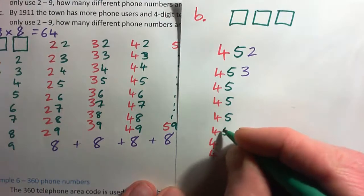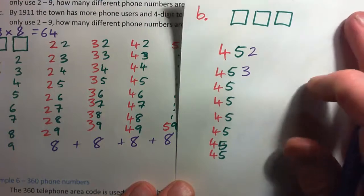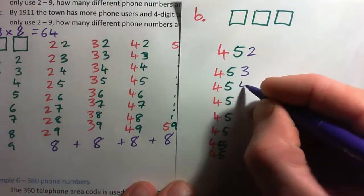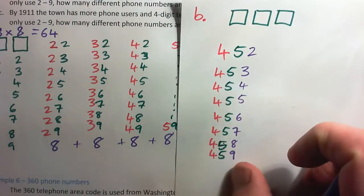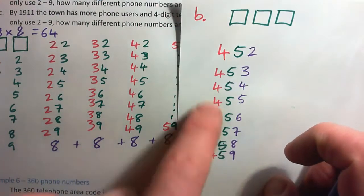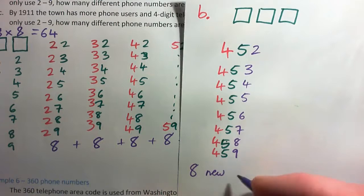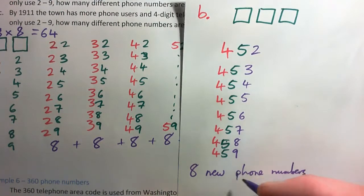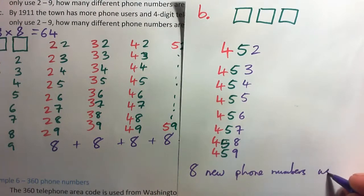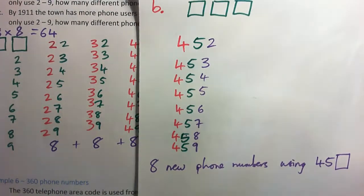So for the phone number 4-5, just by adding one more digit, you can create 8 new phone numbers. And you can do that for any 2-digit phone number — for example 8-9. The key to understanding this is: 4-5-something gives us 8 new phone numbers, and you can do that for any 2-digit phone number.